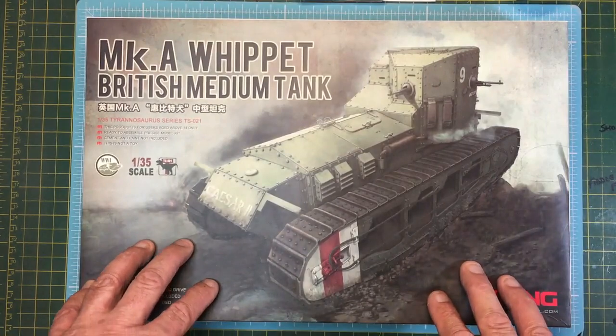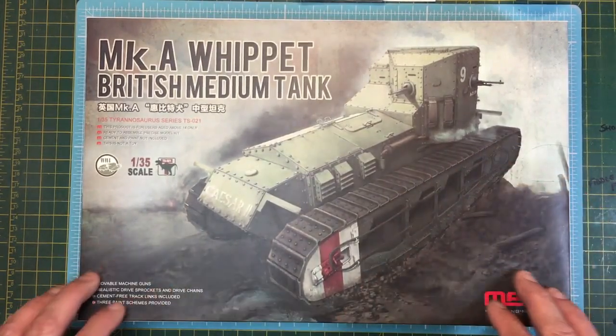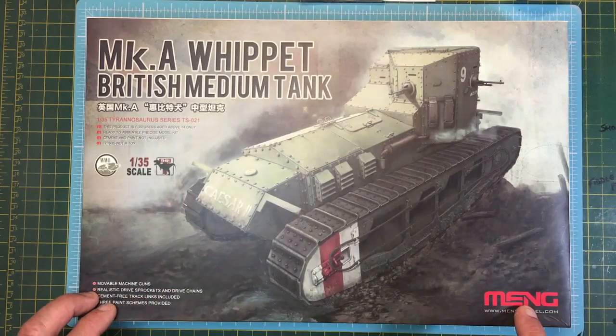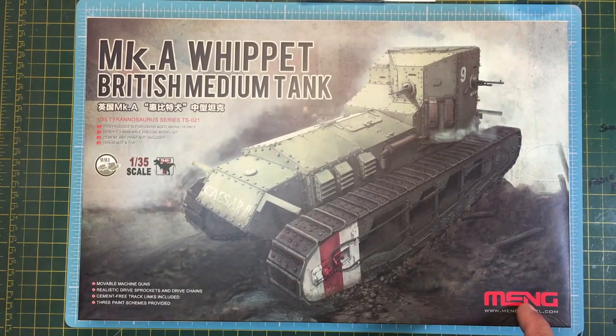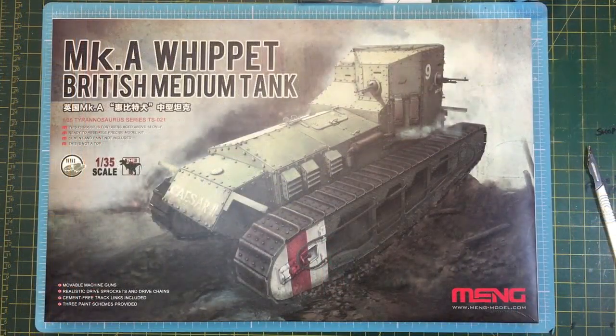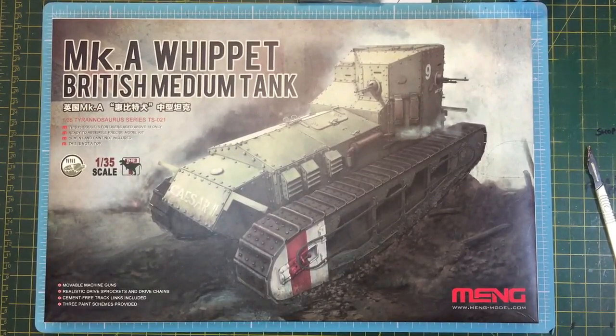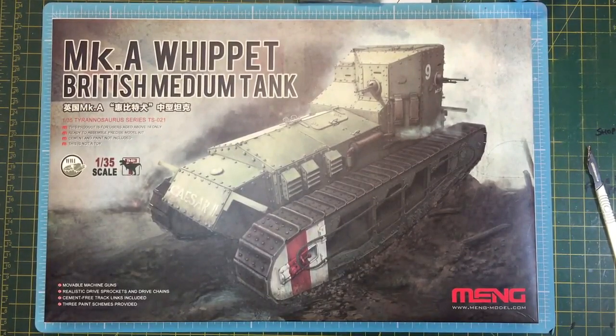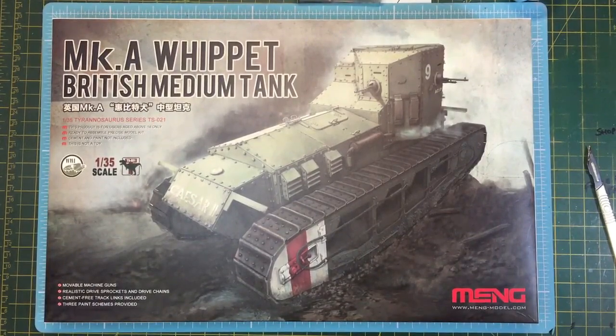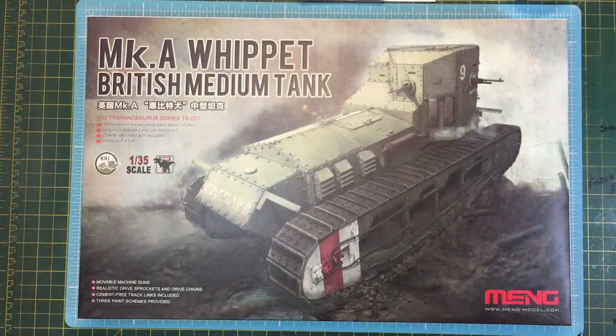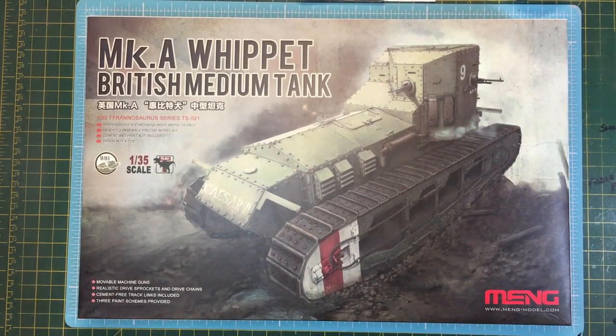The Whippet tank was originally developed by a guy called William Tritton in 1916, and it was first known as the Tritton Chaser. That would have been good going into war I guess, but it was soon renamed the Whippet after the fast-running dog. The first prototype of this tank had a rotating turret taken from the Austin armored car, but the actual tank itself as this model depicts didn't have that.